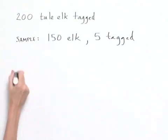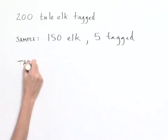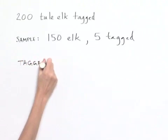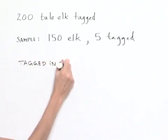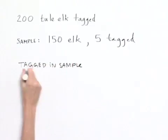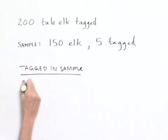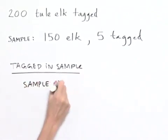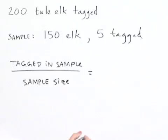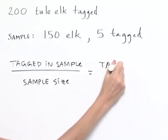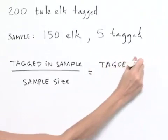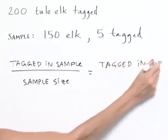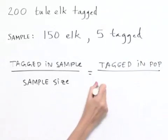And we're told to assume that the number tagged in the sample compared to the number in the sample is going to be equivalent to the number tagged in the population compared to the total population.